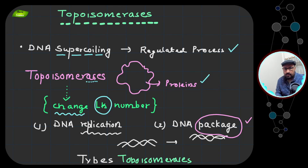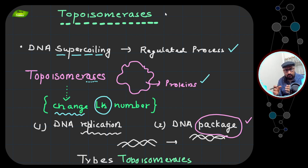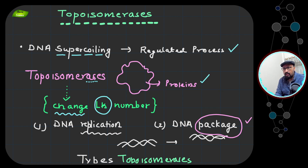Hello everyone, welcome to the video. Today we will understand what topoisomerases are. In the last video we covered DNA supercoiling, linking number, and superhelical density. If you haven't seen that video, I recommend watching it before this one. We'll also revisit linking numbers briefly. Today we'll understand what topoisomerases are, the different types, and some examples.